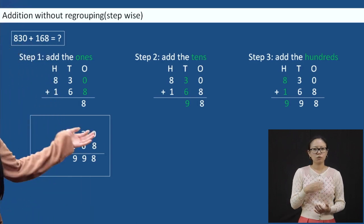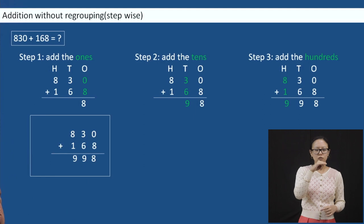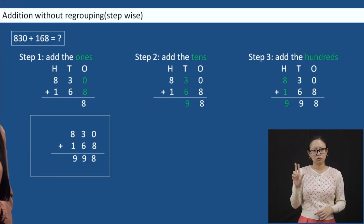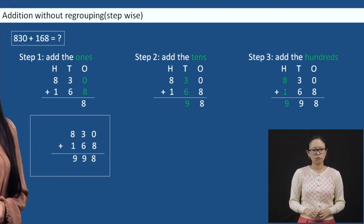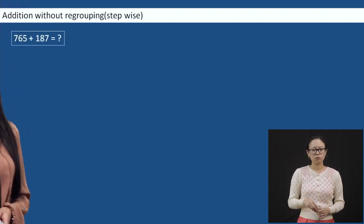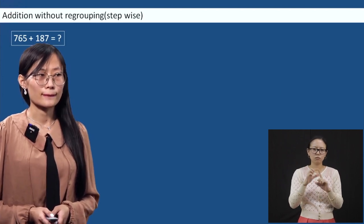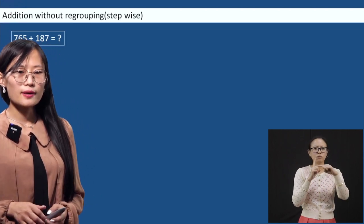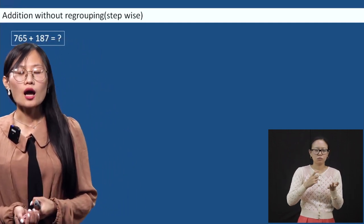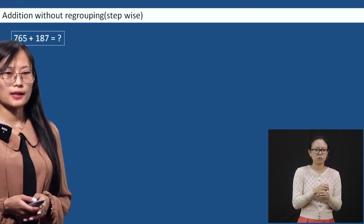This is how it is solved without regrouping. Now we will do addition with regrouping. Regrouping means rearranging the group according to the place value.